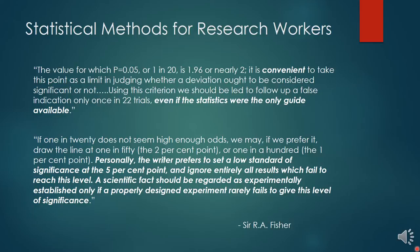Here are Fisher's exact original words from that 1925 textbook: 'The value for which p equals 0.05, or 1 in 20, is 1.96 or nearly 2, and it is convenient to take this point as a limit in judging whether a deviation ought to be considered significant or not. Using this criterion, we should be led to follow up a false indication only once in every 22 trials, even if the statistics were the only guide available.' A couple of pages later: 'If 1 in 20 doesn't seem high enough odds, we may if we prefer draw the line at 1 in 50 or 1 in 100. Personally, the writer prefers to set a low standard of significance at the 5% point and ignore entirely all results which fail to reach this level. A scientific fact should be regarded as experimentally established only if a properly designed experiment rarely fails to give this level of significance.'